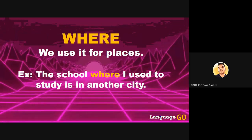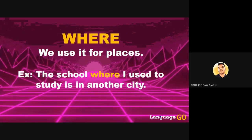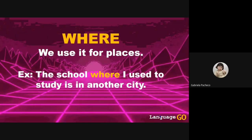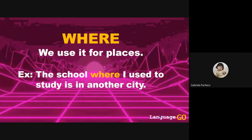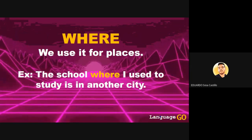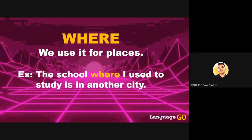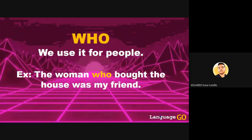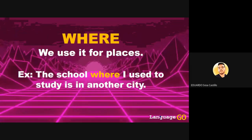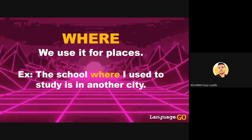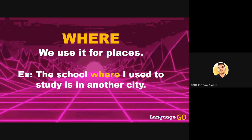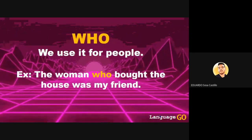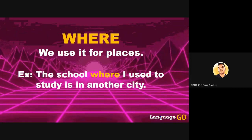This next one is about places. We use 'where' to give more information about places. The example sentence is: 'The school where I used to study is in another city.' The subject here is the school — we're talking about a place, so we use 'where.' In the previous sentence we talked about a woman, that's why we used 'who.'